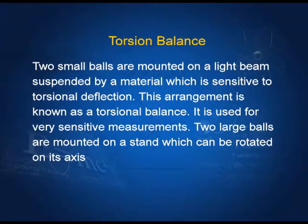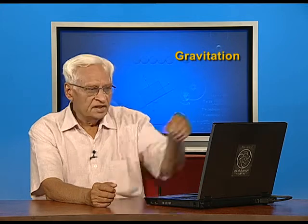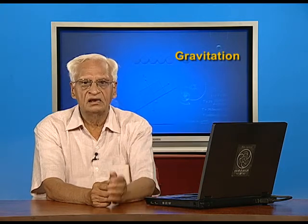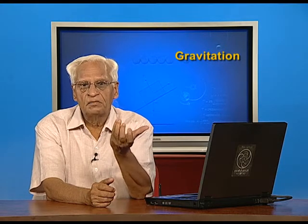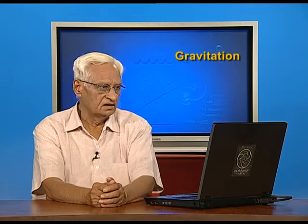The torsion balance consists of two small balls mounted on a light beam suspended by a material which is sensitive to torsional deflection. This arrangement is known as a torsion balance and is used for very sensitive measurements. Two large balls are mounted on a stand which can be rotated on its axis. Here is the beam, which is very light, with two small spheres at its two ends, suspended by a thread that produces a restoring couple when the beam rotates, deflecting the beam by a certain angle.